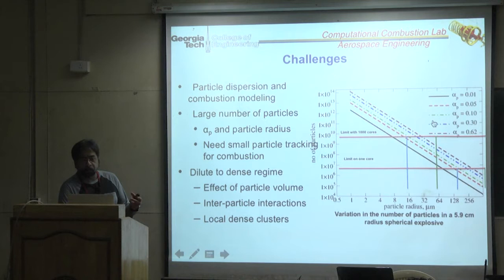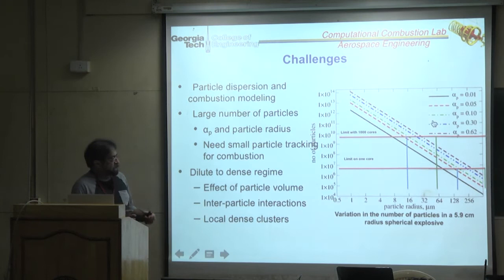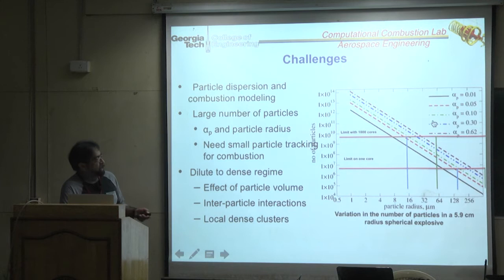We have to deal with what we call a dense-to-dilute regime. Dense means the particles are still point particles but there are so many they are clustering with dense effects — over ten percent volume fraction is considered dense. As the particles spread out it becomes dilute, where the classical Lagrangian method applies.